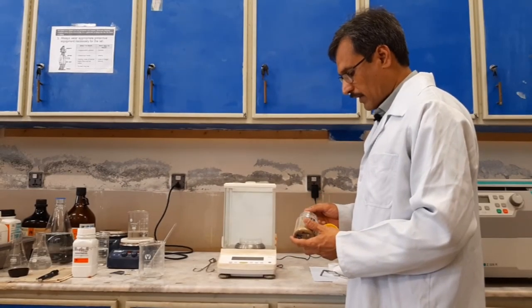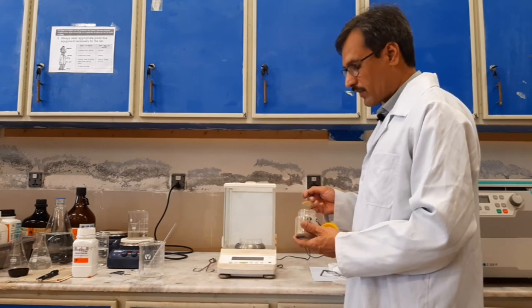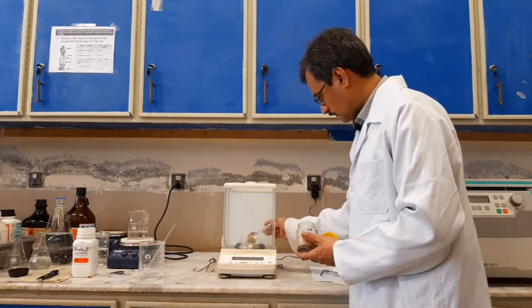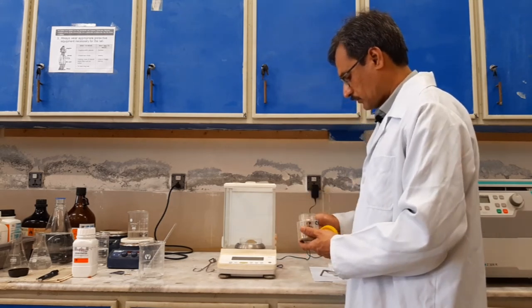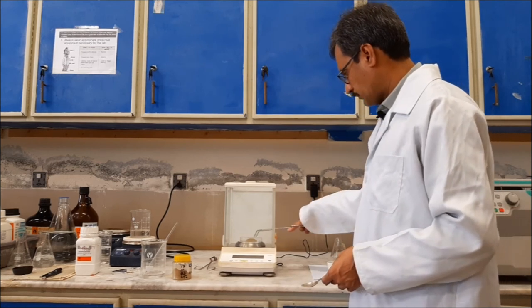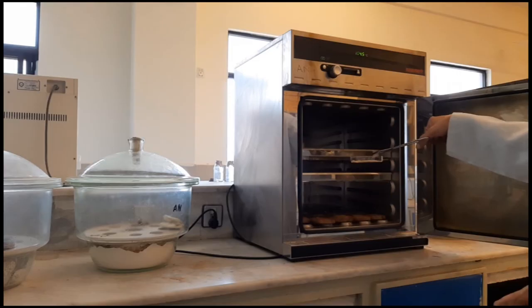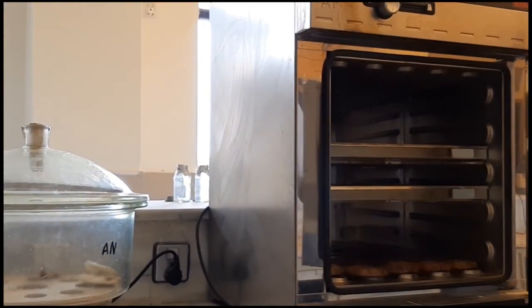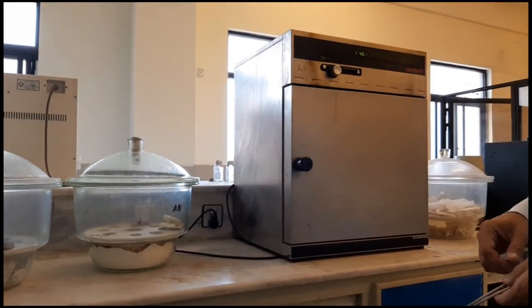Now weigh at least two to five grams of sample. Record the weight. Now place this petri dish in an oven at 105 degrees Celsius for up to 20 hours.